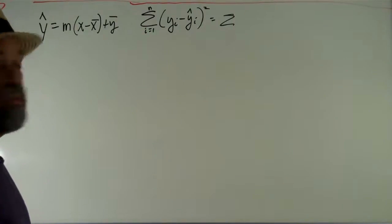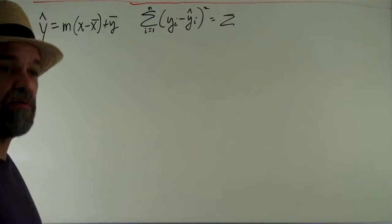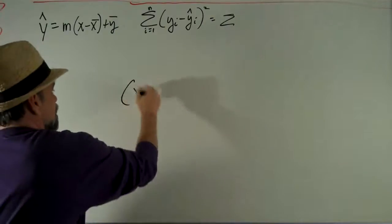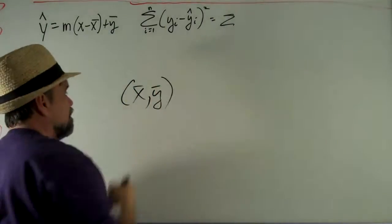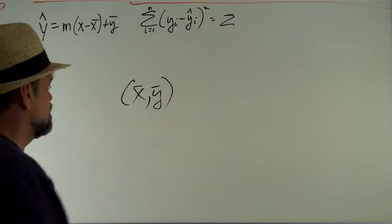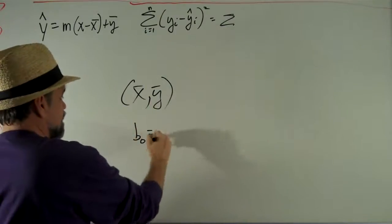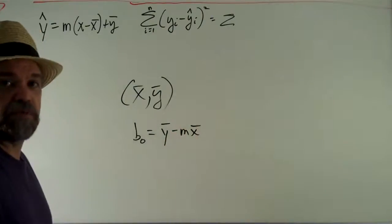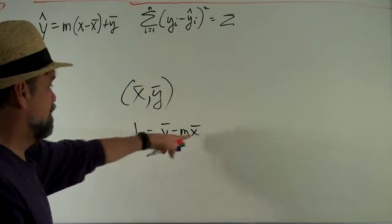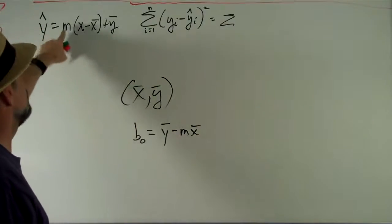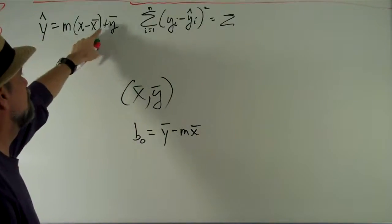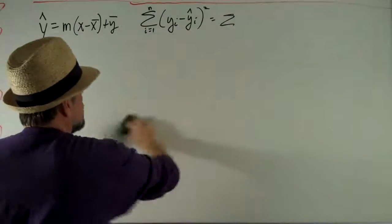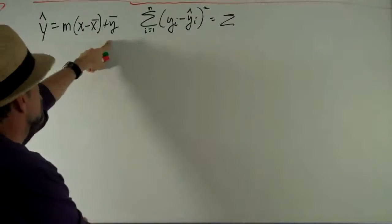We discovered last time that our least squares regression line must go through the point x bar, y bar. This means that our y-intercept is y bar minus mx bar. Plugging this into our original equation, y-hat equals m times x minus x bar plus y bar. We can start from this equation now.